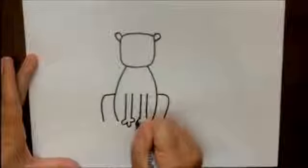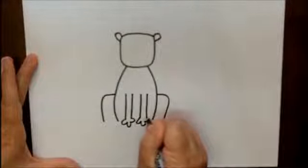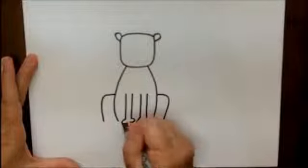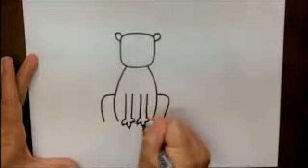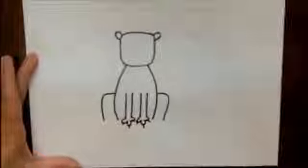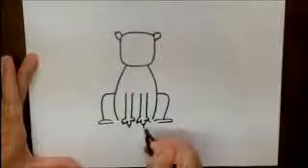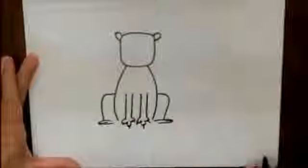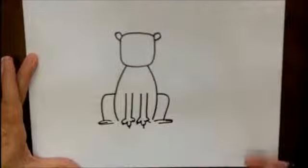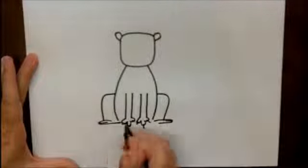And coming out of each toe, maybe a nail. And then here we're going to put a foot here and a foot here. And if you have room for a toe, you can put those in as well. Close that up.